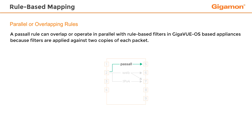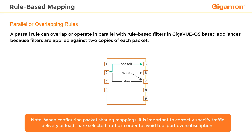In parallel, a copy of all traffic received on port 2 will be forwarded to port 5 through the pass-all mapping, and any traffic received on port 2 which matches the rule for web traffic or the rule for IPv4 traffic will be forwarded to port 6 or 7 according to the matching rule. Note that when configuring packet sharing mappings, it is important to correctly specify the tool destinations or load sharing in order to avoid tool port over-subscription.